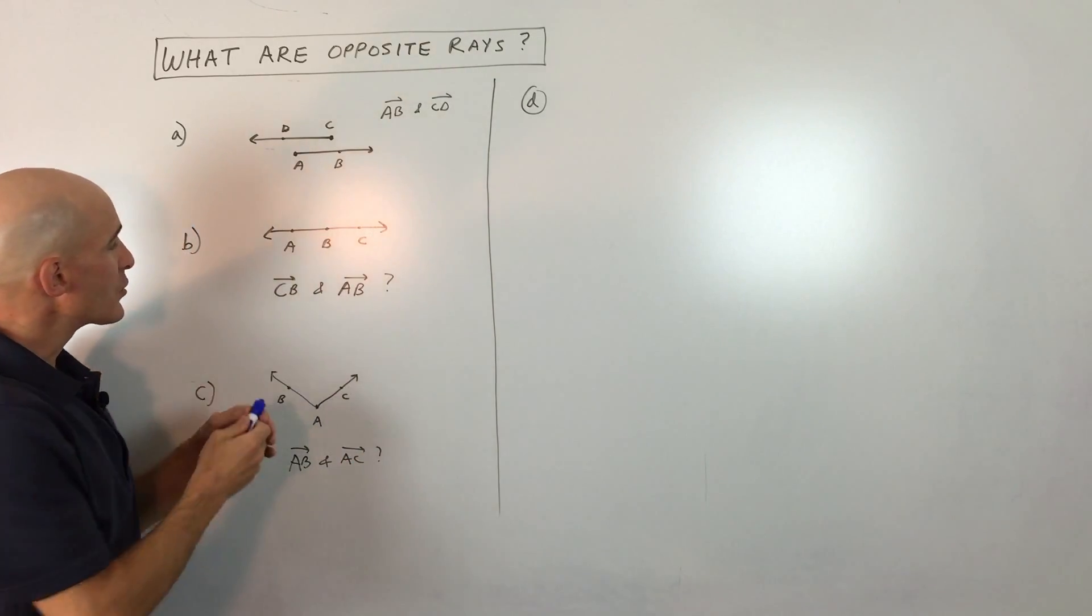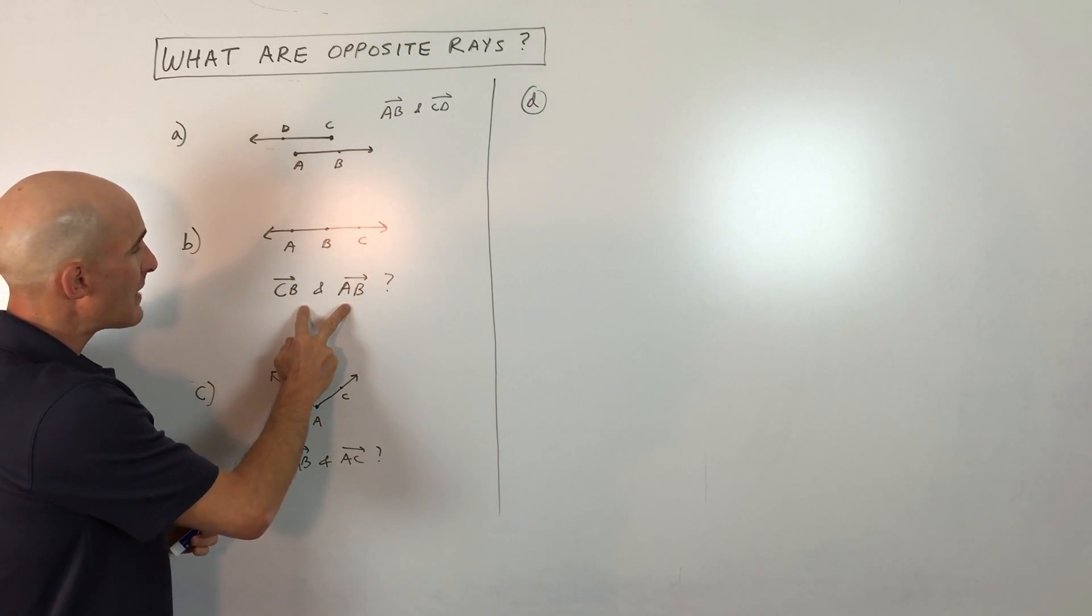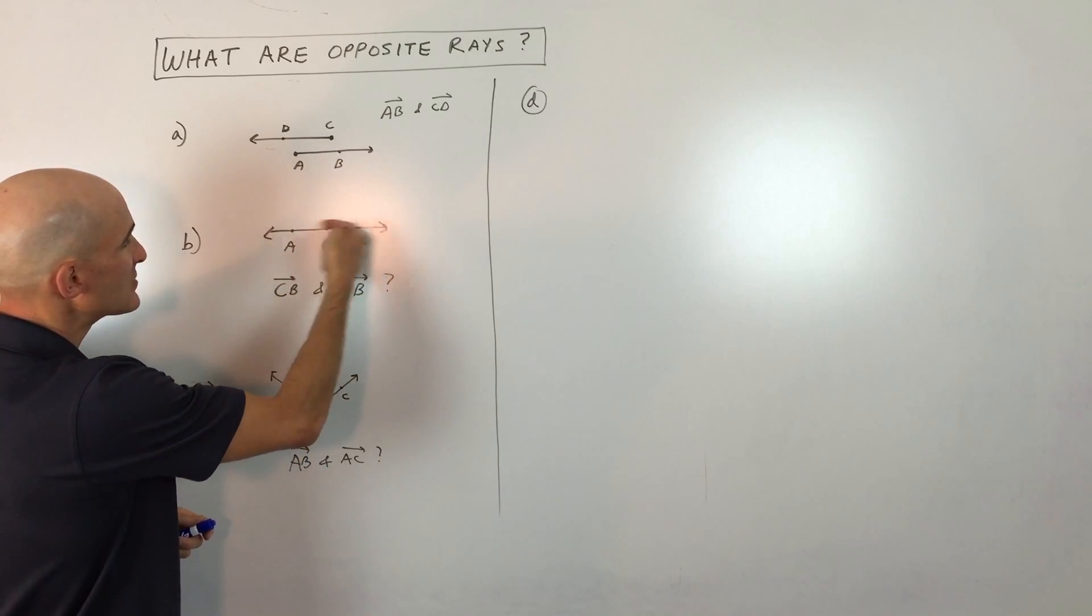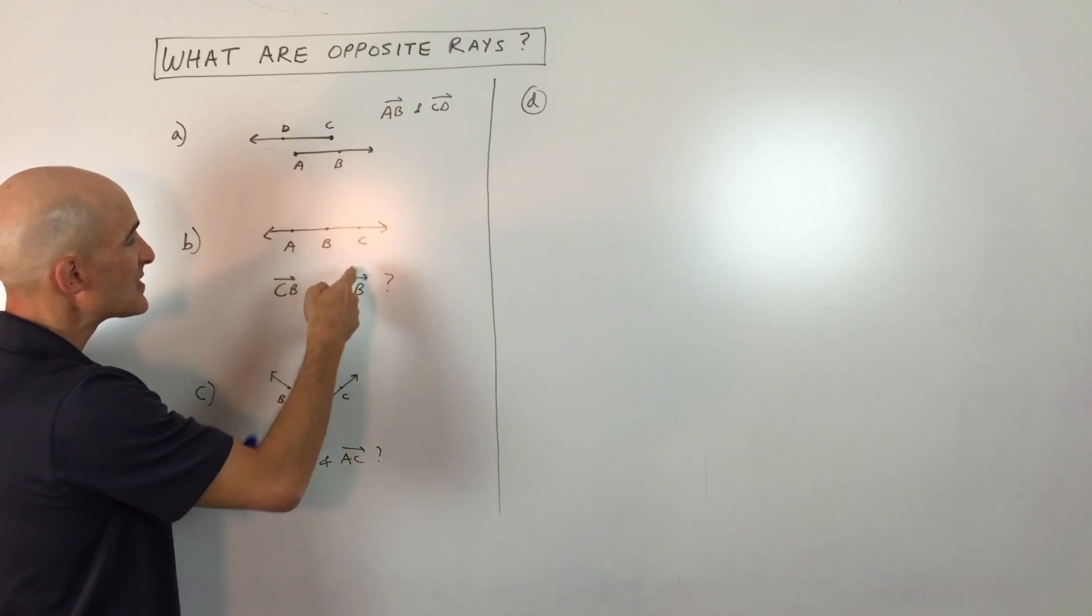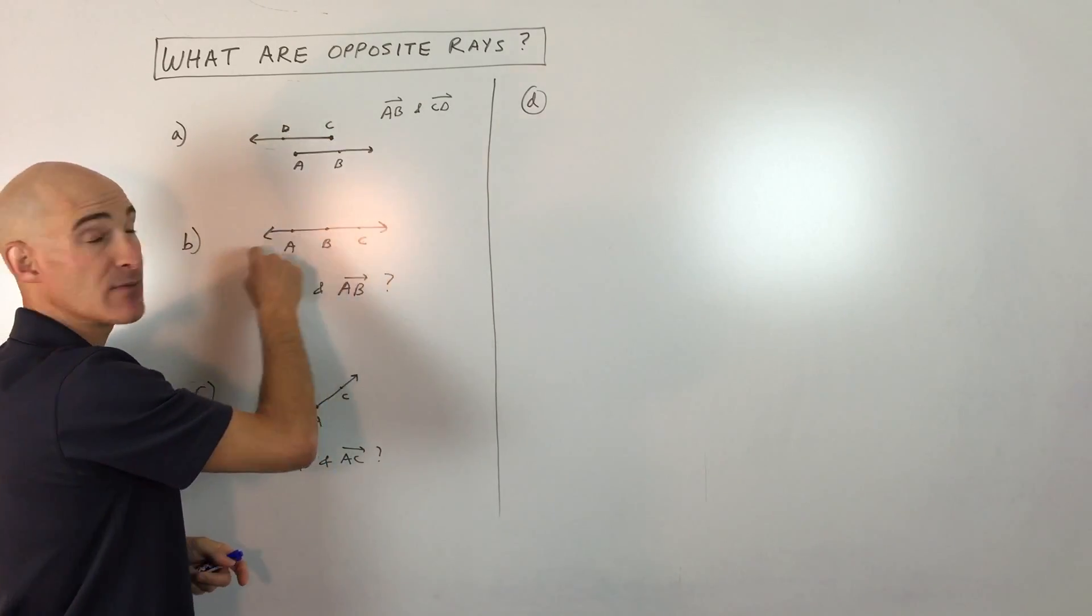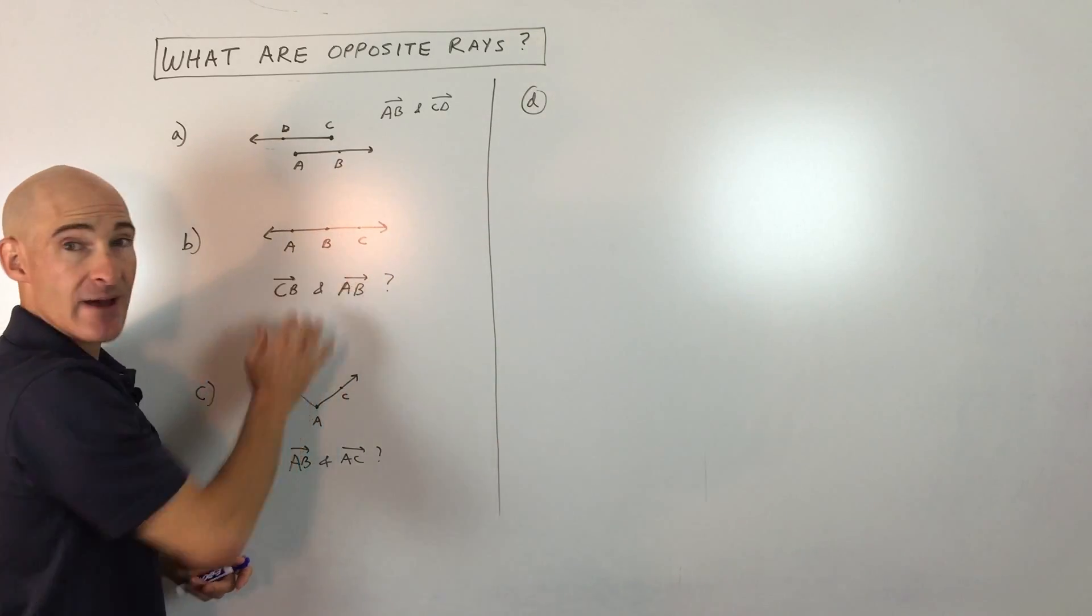So for letter B here, you might think, what about these? Are these opposite rays? Well, let's see, you've got CB, so that's going like this, and AB that's going like this, but you can see they're overlapping, similar to these two rays, but they're just on the same line. So again, these are not opposite rays.